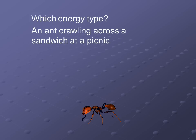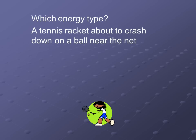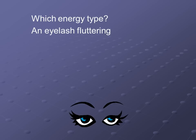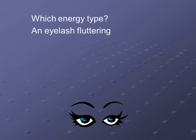Our next one: an ant crawling across a sandwich at a picnic. The answer is kinetic — the ant is crawling, therefore it's energy in motion. Next: a tennis racket about to crash down on a ball near the net. Don't let the ball near the net throw you off — we're talking about the tennis racket specifically. It was about to crash down, but it hasn't come down on the ball yet, meaning the person is getting ready to strike but it has not moved yet. Therefore their energy is stored up — that means it must be potential energy. Next: an eyelash fluttering. Fluttering just describes movement, therefore it's energy in motion — kinetic energy.